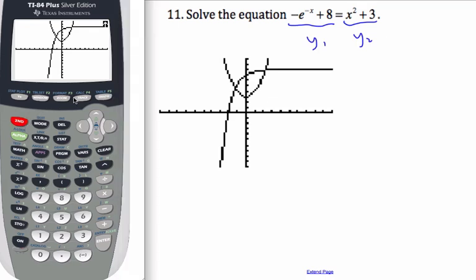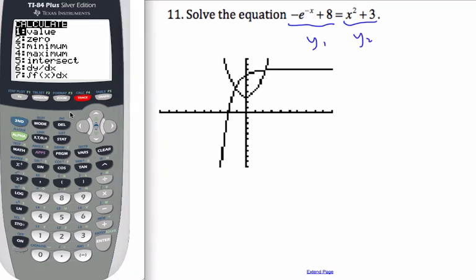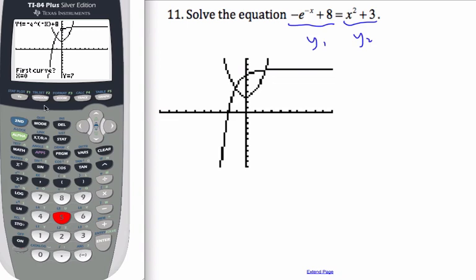So to do it, I go second, trace, which is our calculate menu, and I'm going to go to number five here, which is intersect. It's asking me for the first curve, and I notice on Y1 it's referring to this curve, which is one of the curves that I'm looking for the intersection, so I hit enter.